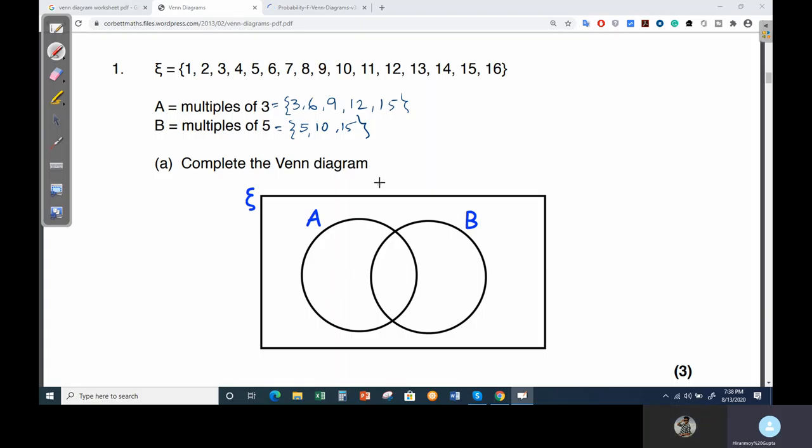So first what you have to do, you have to check in between A and B which are common. You can see that fifteen is common between them, right? Yes sir. So in between them fifteen you have to write, because this is the common area coming between A and B.